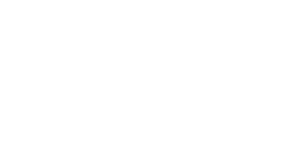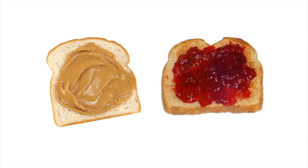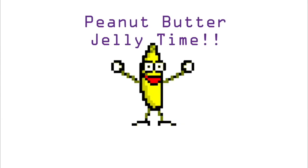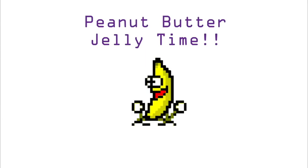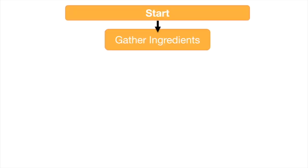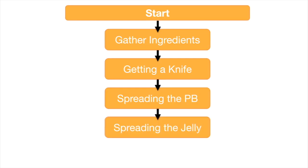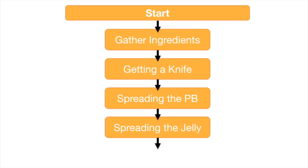If we wanted to make a peanut butter and jelly sandwich, for example, we would need to follow multiple steps in a logical order. We would begin by gathering our ingredients, getting a knife, spreading the peanut butter, spreading the jelly, and so forth.